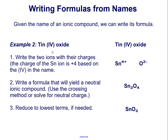For a second example, let's look at tin(IV) oxide. We write the two ions with their charges, noting that the charge of the tin ion is 4+ based on the Roman numeral 4 in its name. Oxygen always has a charge of negative 2. Now we cross: the superscript 2 of oxygen becomes the subscript of tin, and the superscript 4 of tin becomes the subscript of oxygen. Having done that, we see that 2 and 4 are not in lowest terms. Saying we're going to have 2 tin atoms for every 4 oxygen atoms gives no better information than to say 1 tin atom for every 2 oxygen atoms, so SnO2 is the formula in lowest terms.